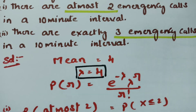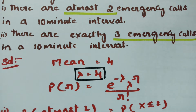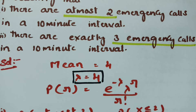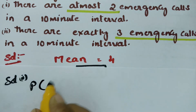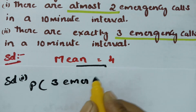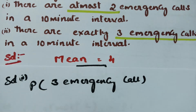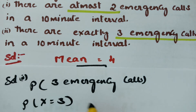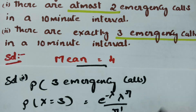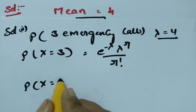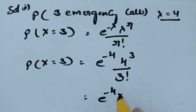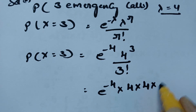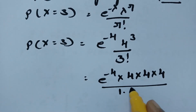For solution 2, we find the probability of exactly 3 emergency calls: P(X = 3) = e^(-λ) × λ^r / r!. With lambda = 4 and r = 3, this becomes e^(-4) × 4^3 / 3! = e^(-4) × (4 × 4 × 4) / (1 × 2 × 3).